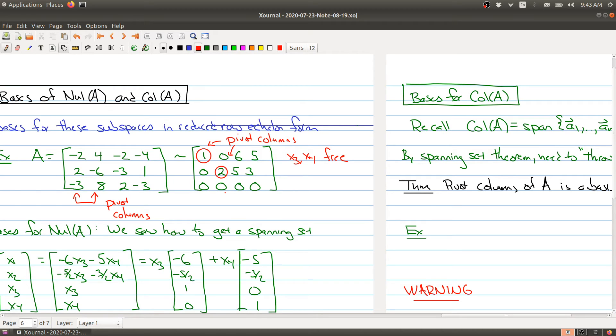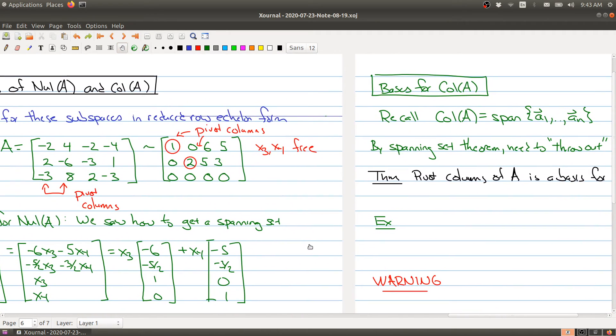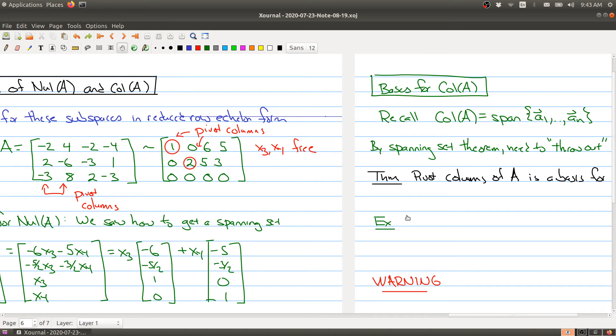In our example, the column space of A is equal to the span of the first two columns, minus 2 to minus 3 and 4 minus 6 and 8. That would be the basis for my column space.